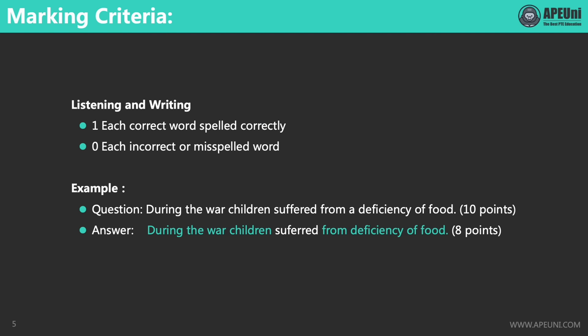Now let's learn about the marking criteria of this task. Write from Dictation is scored by counting the number of correct words in the response. You will get one point for each correct word spelled correctly, and zero points for each incorrect or misspelled word. So you will have to get the word right and the spelling right. Let's see an example.